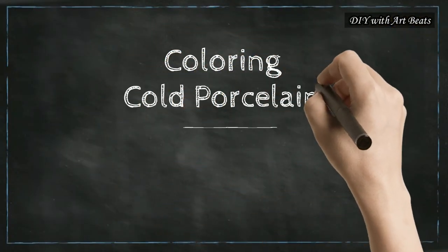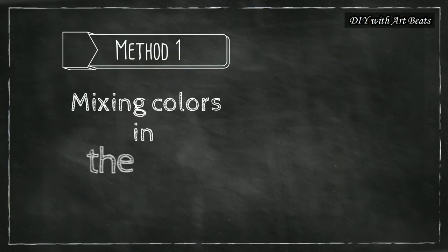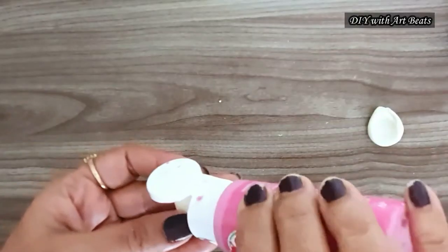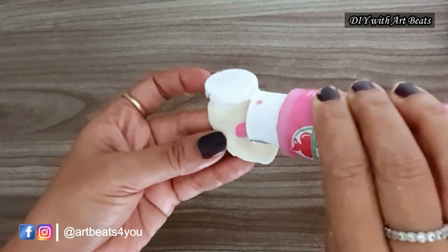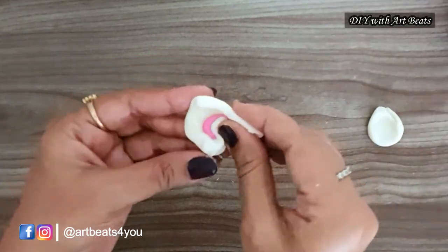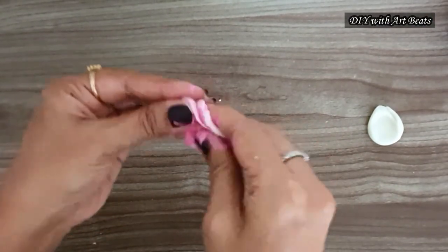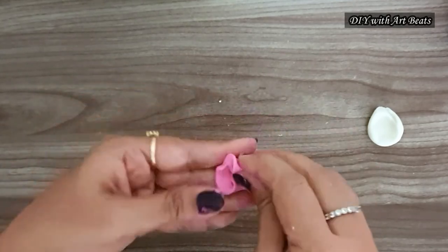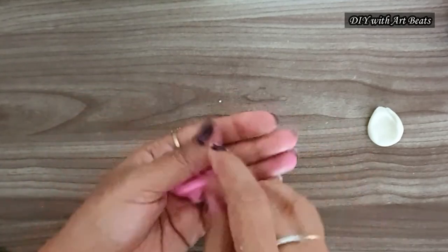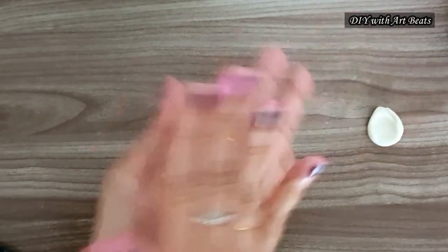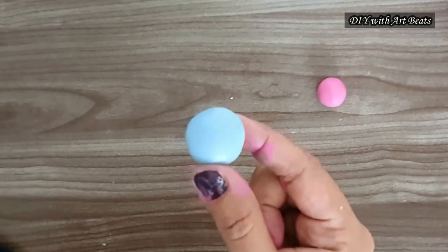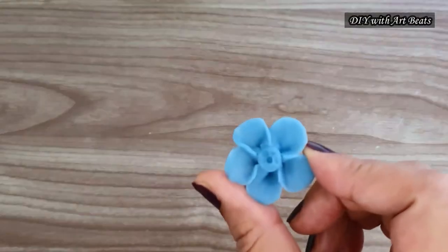Now let's see how to color the cold porcelain clay. It can be done in two ways. Method 1 by mixing colors in the dough. For making colored cold porcelain I am using acrylic colors here. These work well with most of the art forms. Take some acrylic colors and knead it with the dough till it gets mixed well in the dough. And then you can shape the clay in the design you want.